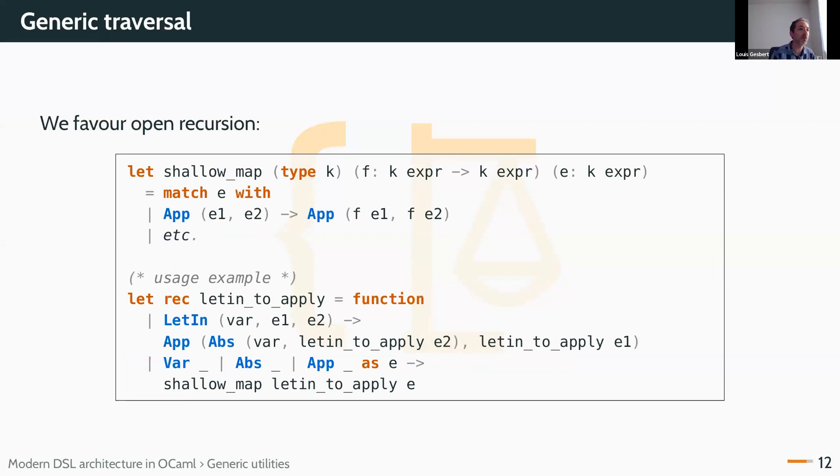For traversal now, something a little more complex, my favorite way of doing this is open recursion. I write a non-recursive function that takes, with polymorphic k as before, it takes a mapper for an expression. And then it will just deconstruct and reconstruct after calling f on each subterm my AST. When I want to use that, I write this time a recursive function.